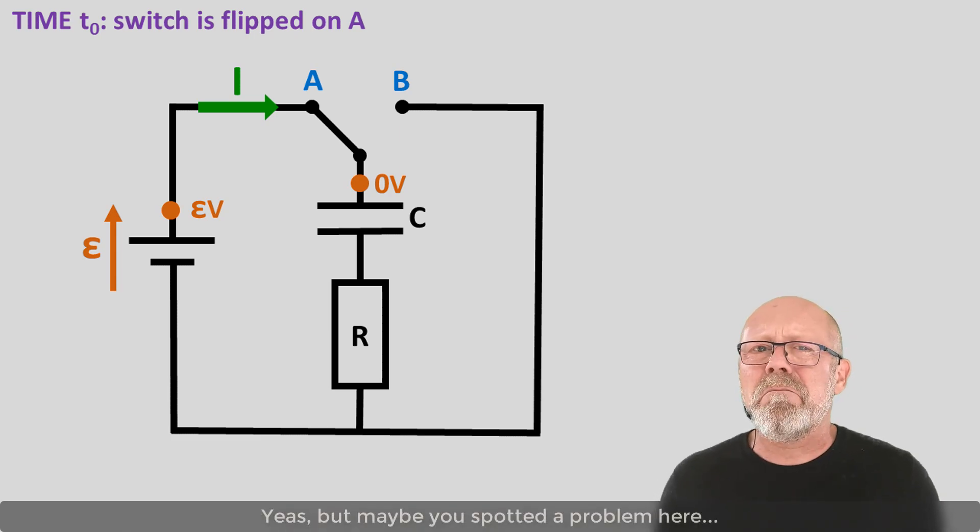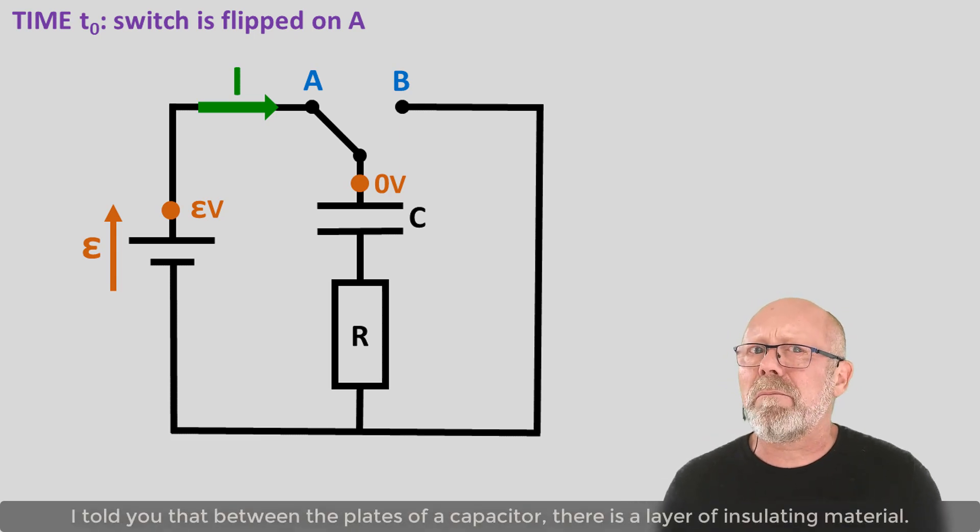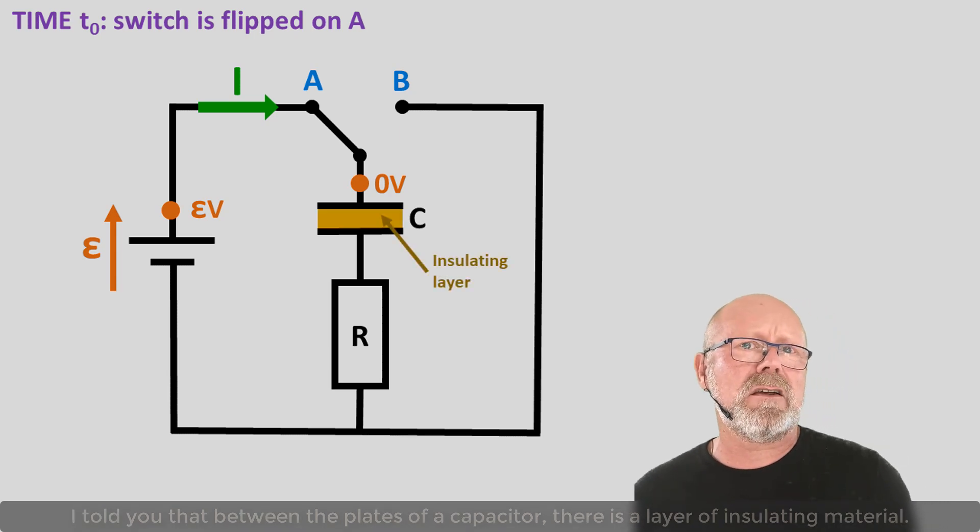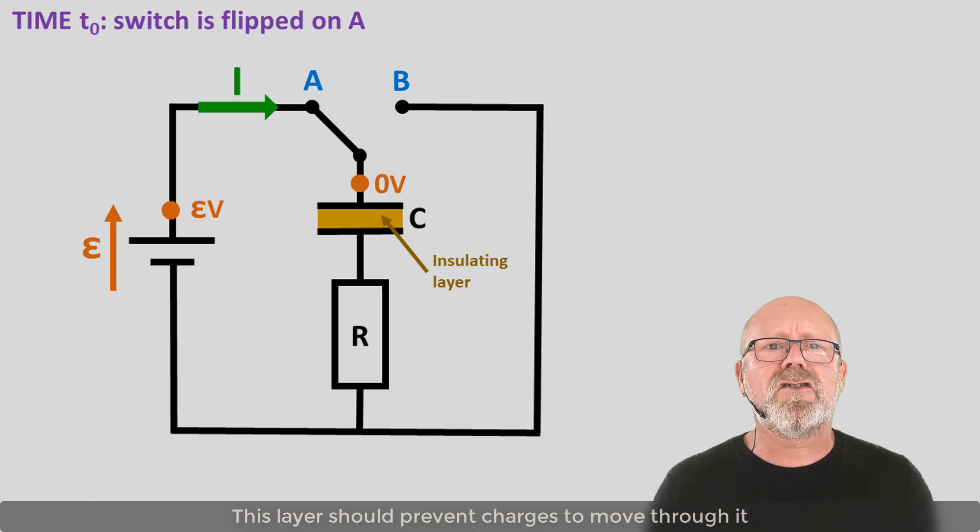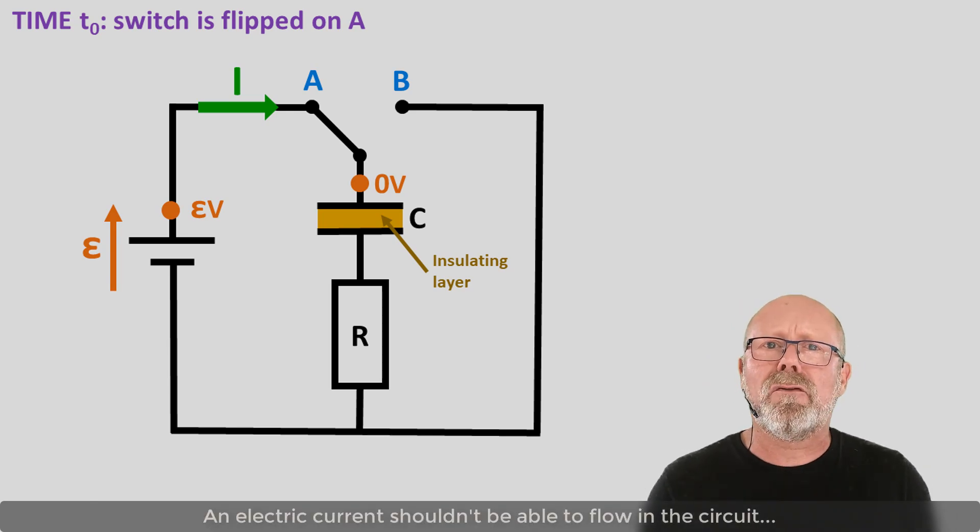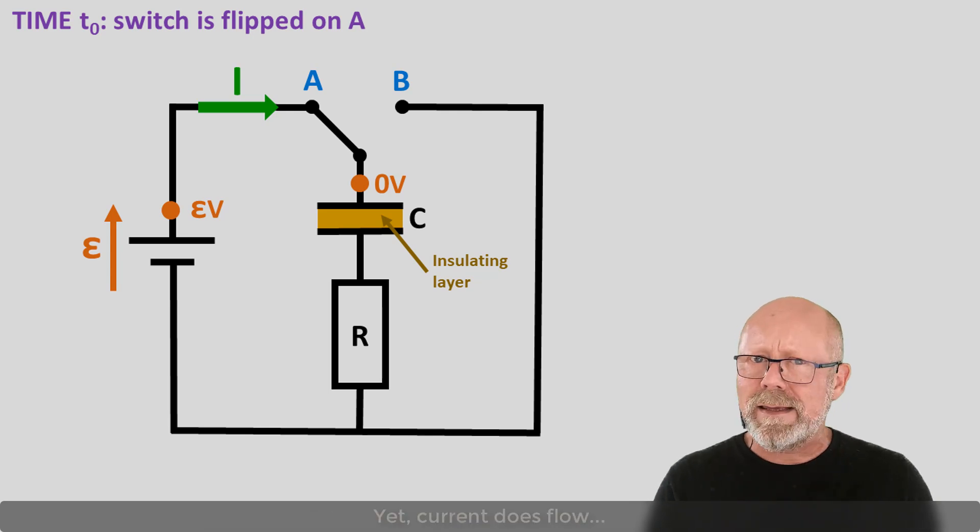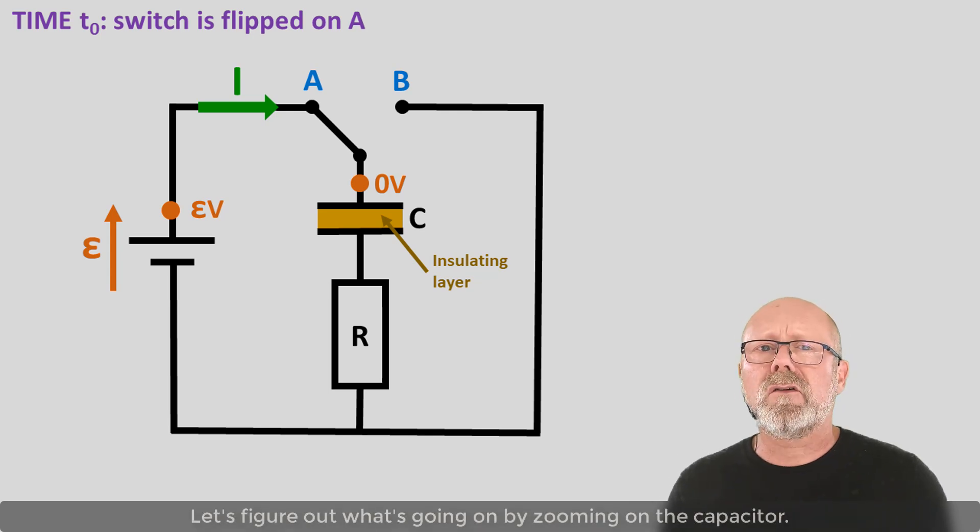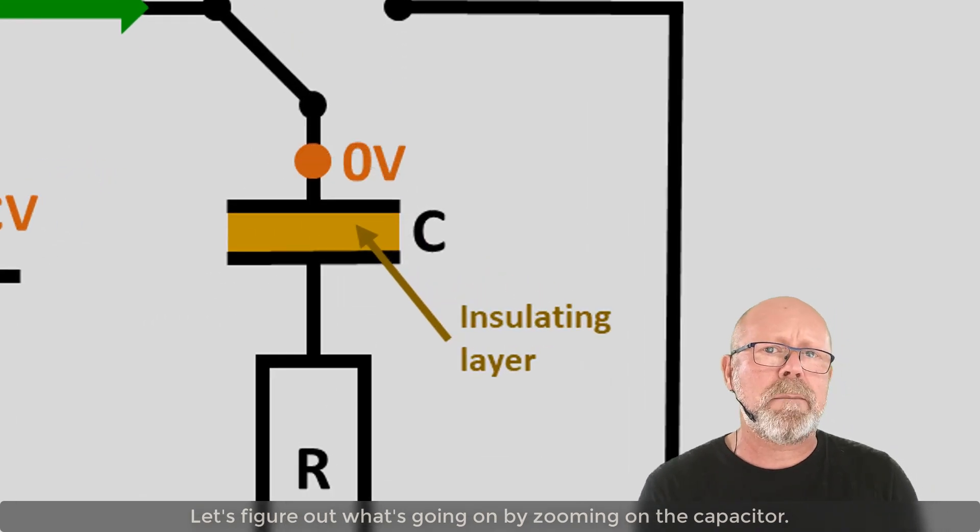Yes, but maybe you spotted a problem here. I told you that between the plates of a capacitor, there is a layer of insulating material. This layer should prevent charges to move through it. An electric current shouldn't be able to flow in the circuit. Yet, current does flow. Let's figure out what's going on by zooming on the capacitor.